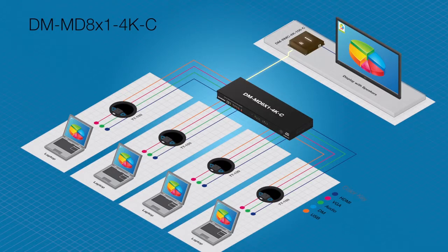In addition to the HDMI out of the HD model, the DM version adds an HD-Base-T output to drive the signal up to 330 feet.